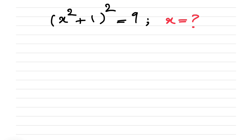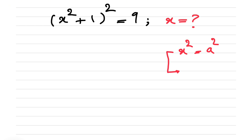In these types of questions, when we have x² = a², we know 9 is 3². What we usually do is take the square root on each side of the equation, but we have to keep in mind that once we do that, we get the absolute value of x equal to the square root of a², which is a. So at the end, x = ±a.